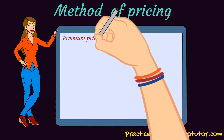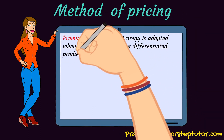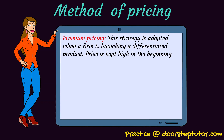Then comes premium pricing. This strategy is basically adopted when we are launching a new product, but the condition is that the product should be differentiated — it should be unique and different from other products. Only then will we be able to command a premium price. We all know the example of Apple: whenever Apple launches a new product, it keeps the price high in the beginning, then gradually decreases it. Premium pricing is where the product is priced high in the beginning, and gradually the company decreases its price over time.